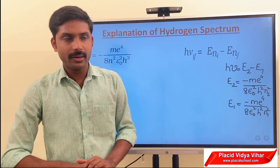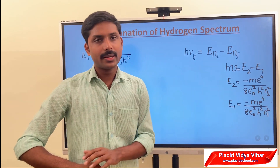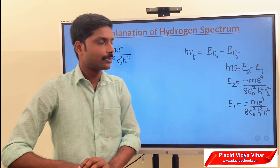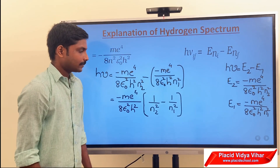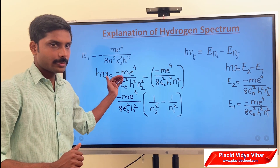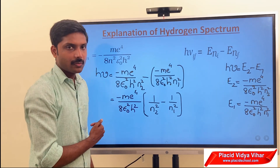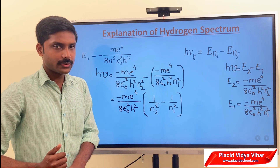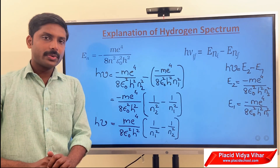The difference between E2 and E1 is only the value of n: for E2 it is n2, and for E1 it is n1. Substituting the values of E2 and E1, taking common terms outside, and simplifying, we are left with the expression involving 1 over n2-squared minus 1 over n1-squared. Eliminating the negative sign and rearranging gives: h-nu equals m e to the power 4 by 8 epsilon-squared h-squared into 1 over n1-squared minus 1 over n2-squared.